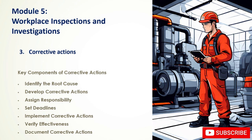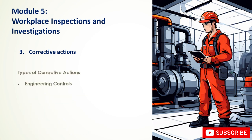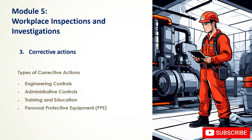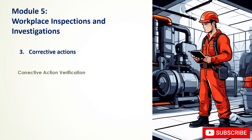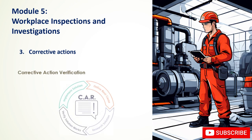Types of corrective actions include engineering controls — physical modifications to equipment, processes, or the workplace; administrative controls — changes to work procedures, policies, or management practices; training and education to improve employee knowledge and skills; and PPE as a temporary measure while other controls are implemented. To ensure effectiveness, monitor the implementation process, measure impact on preventing recurrence, conduct follow-up inspections or audits, and adjust corrective actions as needed.